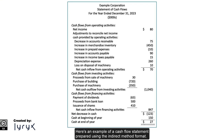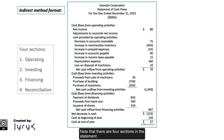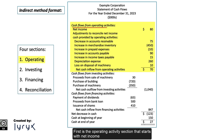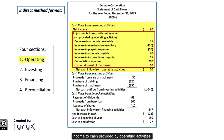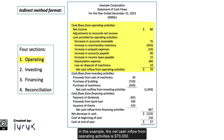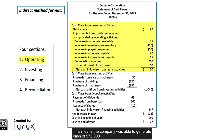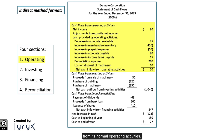Here is an example of a cash flow statement prepared using the indirect method format. Note that there are four sections in the statement. First is the operating activities section that starts with net income, followed by various adjustments to reconcile net income to cash provided by operating activities. In this example, the net cash inflow from operating activities is $70,000, meaning the company generated $70,000 from its normal operating activities.